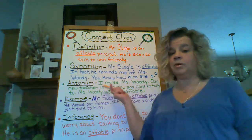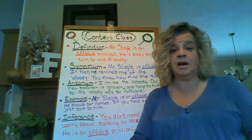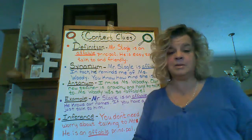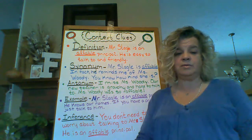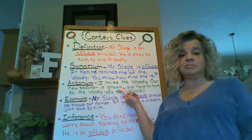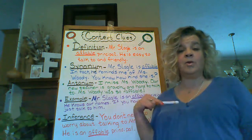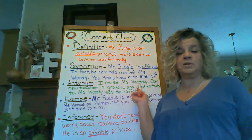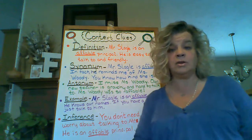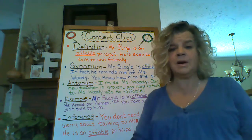Now when we move on, we look at the next one — antonym. Antonym means the opposite. Sometimes authors will use the opposite of what the word means. So the next sentence says: I miss Miss Woody. Our new teacher is grouchy and hard to talk to. Miss Woody is so affable. So there we're saying Miss Woody is affable, and the new teacher is grouchy and hard to talk to. We already said we miss Miss Woody, so we know we like her. She's the opposite of grouchy and hard to talk to. So the opposite of grouchy would be kind or nice, and the opposite of hard to talk to would be easy to talk to. That is how we would use antonym.